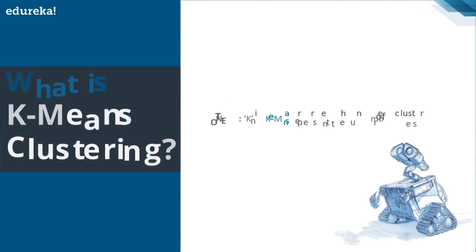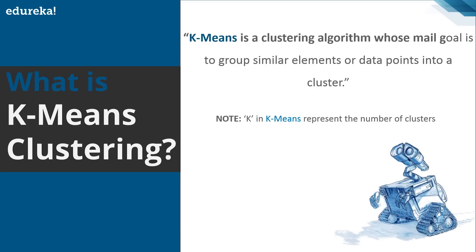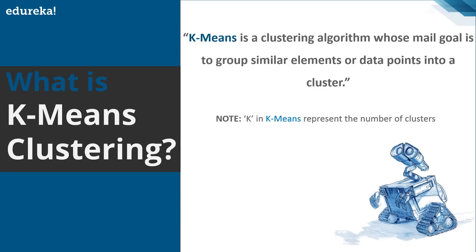Now since our main focus is K-Means clustering, let's focus on that. K-Means is a clustering algorithm whose main goal is to find groups in the data. The number of groups or clusters is represented by K. The algorithm runs iteratively to assign each data point to one of the K groups based on the features that are provided.